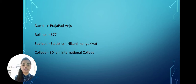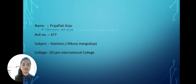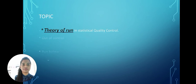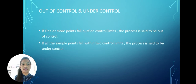As per the topics given by the sir, I'm going to explain the topic: Theory of Runs in Statistical Quality Control. The theory of runs contains: under control, out of control, run above, run below, and graphs. Here you can see in the presentation the definitions of out of control and under control.